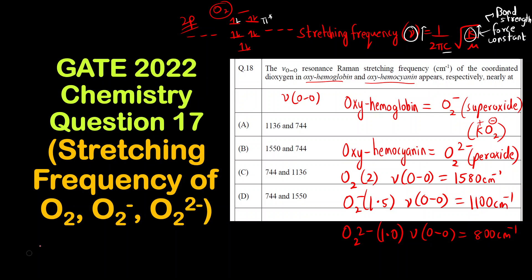Which is the closest answer? For oxyhemoglobin it should be around 1100, that is 1136, and for oxyhemocyanin it is around 800, that is 744. So the correct answer is option A.